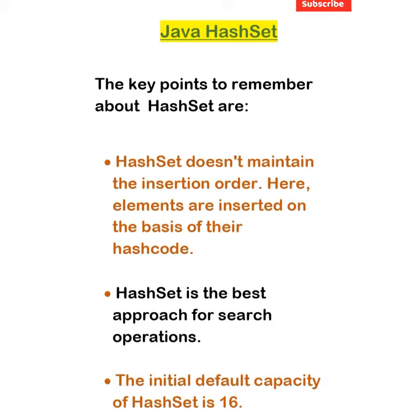HashSet does not maintain insertion order — elements are inserted on the basis of their hash code. HashSet is the best approach for search operations, so if we are building any search operation, it is the best collection to use. The initial default capacity of HashSet is 16.